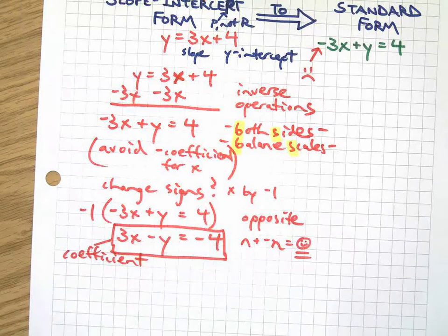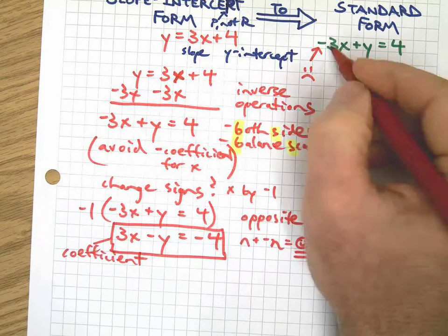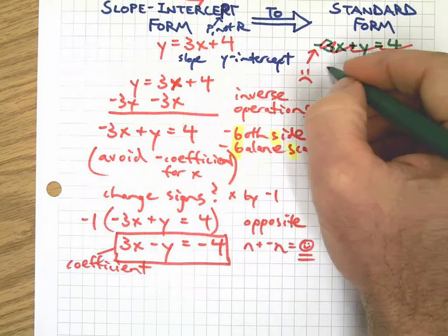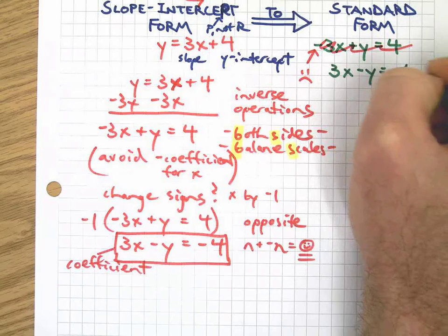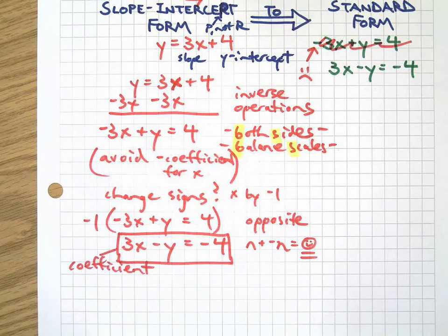Anyway, here's our standard form done because we managed to get the coefficient of x. Coefficient, how do you spell that, Mr. Witcher? Oh, kind of like that. Anyway, there we go. So this standard form actually, we go back to our opening frame here, should look like this.